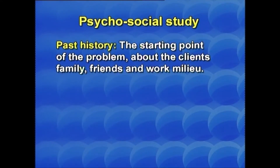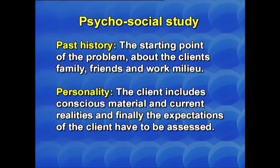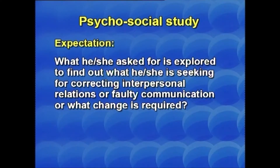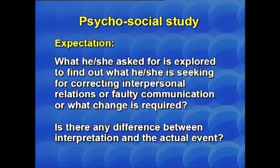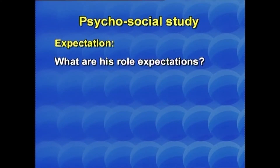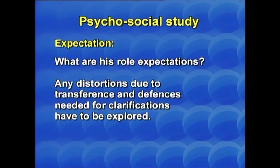Past history covers the starting point of the problem about the client's family, friends, and work milieu. Personality includes conscious material and current realities. The expectations of the client have to be assessed — what he or she is asking for, seeking to correct in interpersonal relations or faulty communication, and what change is required. Any difference between interpretation and the actual event, role expectations, distortions due to transference, and differences needing clarification all have to be explored.